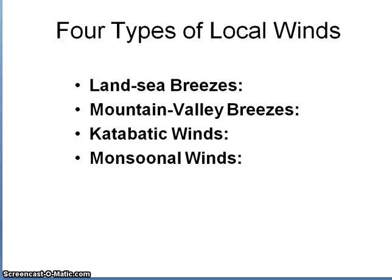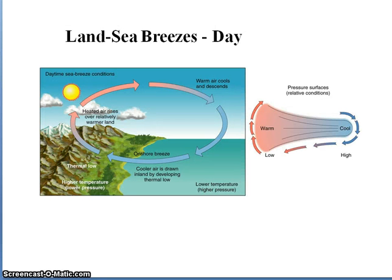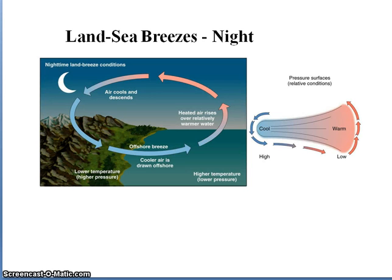There are four smaller-scale winds I want you to understand: land-sea breezes, mountain-valley breezes, katabatic winds, and monsoonal winds. For land-sea breezes, during the day the land heats up faster than the ocean — as that air mass rises, it pulls in cooler ocean air. At night there's a reversal: the land cools off faster than the ocean, so air sinks over the land mass and you have an offshore breeze. These are daily patterns of onshore breeze during the day and offshore breeze at night.